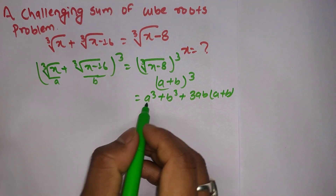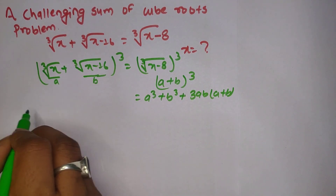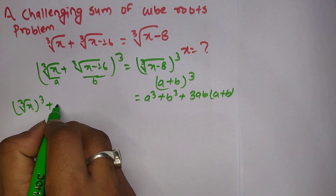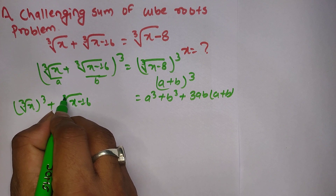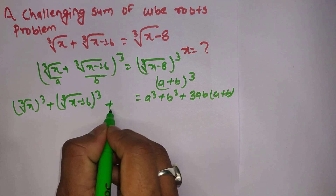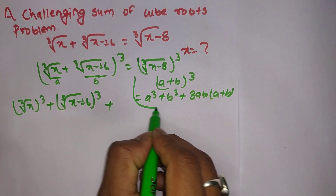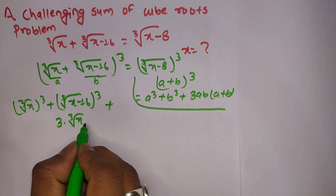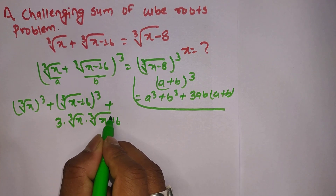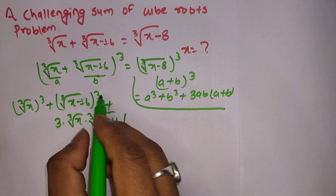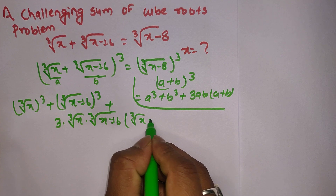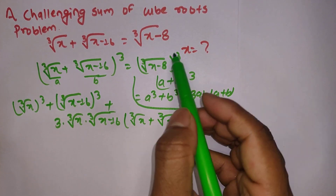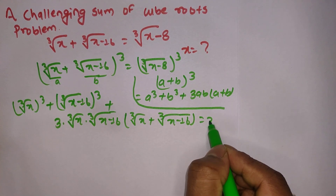According to the formula, a³ is cube root of x to the power 3, and b³ is cube root of x minus 16 to the whole power 3, plus 3 times ab — where a is cube root of x and b is cube root of x minus 16 — times (a plus b), which is cube root of x plus cube root of x minus 16.